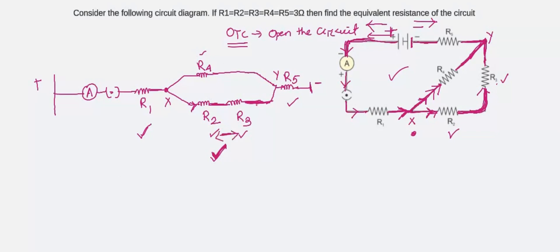Let's solve R2 and R3 first. Let's name it R dash. R dash = R2 + R3. R2 is given as 3 ohm and R3 is given as 3 ohm. So the total is 6 ohm. The equivalent resistance of R2 and R3, R dash, comes to be 6 ohm.